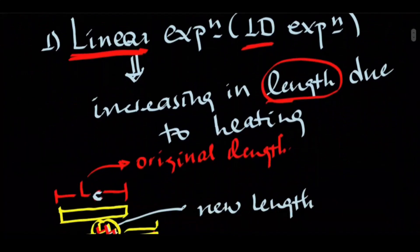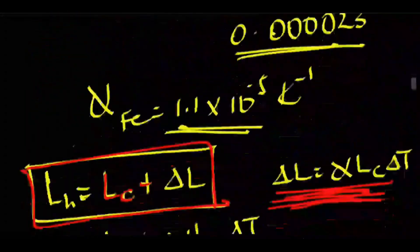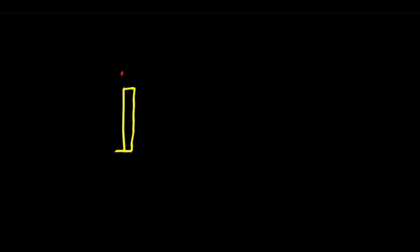So this is all about linear expansion — it refers to the increase in length. It affects one dimension: expansion along the length, or along the height of an object. Whether it's along the length or the height, as long as it's one dimension, we call it linear or one-dimensional expansion. The next type is area expansion. You can ask any questions in the comments section.